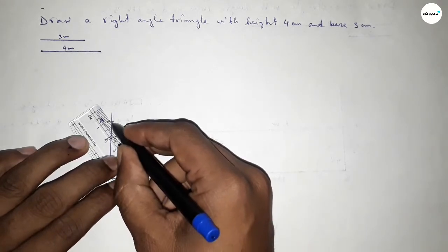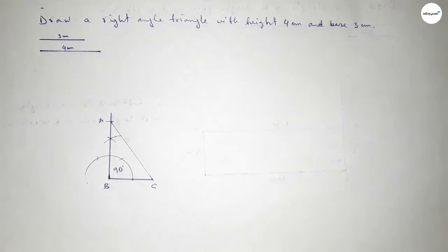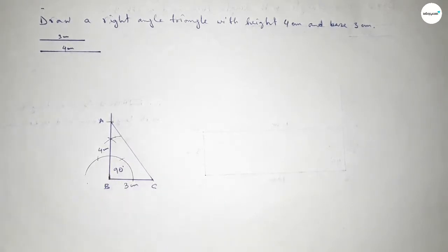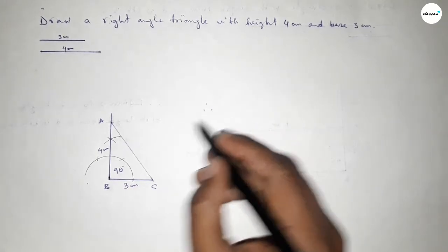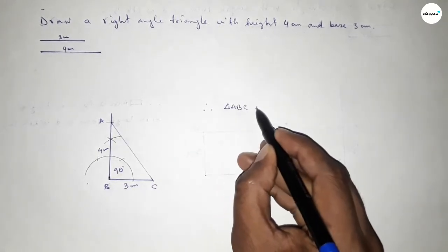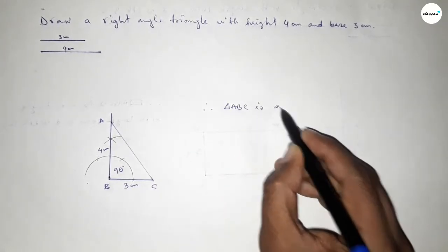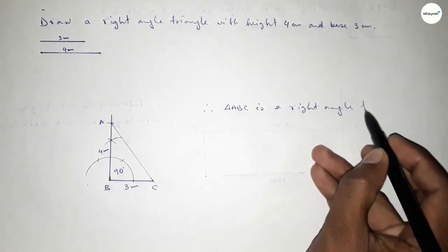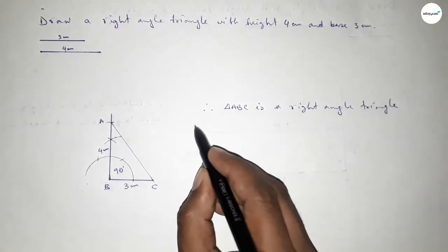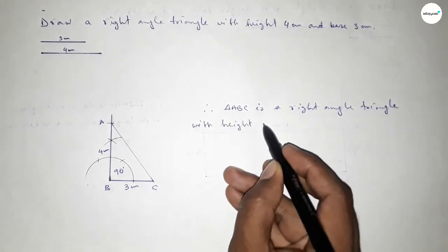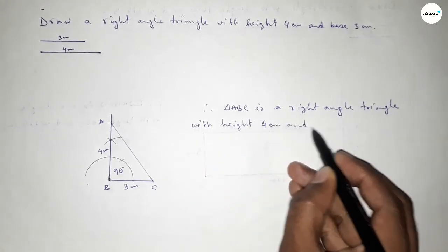Now joining A and C to get triangle ABC. This side is 3 centimeters, this side is 4 centimeters. Therefore triangle ABC is a right angle triangle with height 4 centimeters, base 3 centimeters, and angle B equal to 90 degrees.